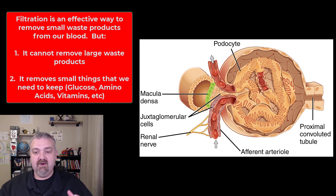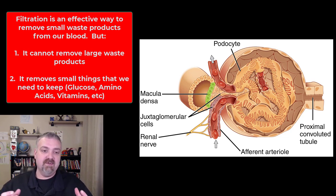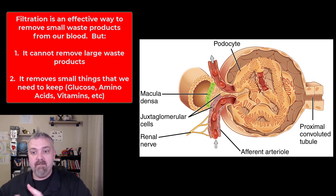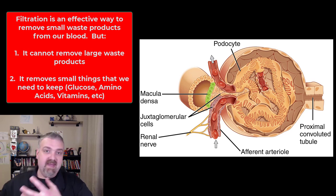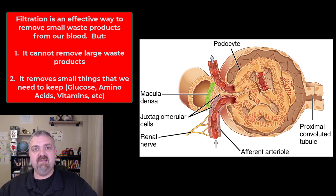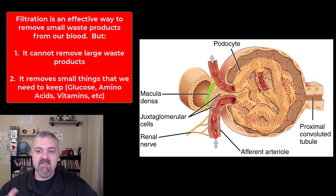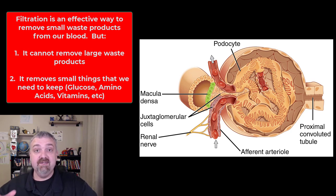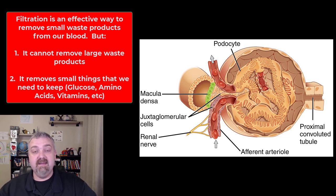It's almost like we throw the baby out with the bath water, but then immediately grab the baby and reabsorb it. The reabsorption at the proximal convoluted tubule is a very big deal. We're filtering out good stuff and bad stuff and way too much fluid for us to survive, so the rest of the system is designed to reabsorb 99 to 100% of most of those things.